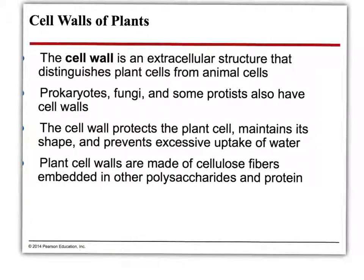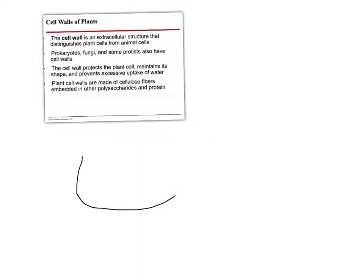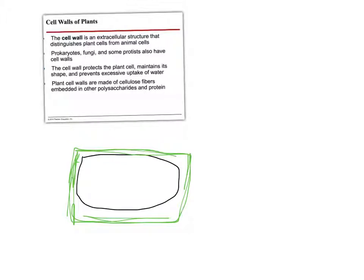First off, examples. The cell wall of plants — the cell wall of a plant is actually extracellular. It's outside of the plasma membrane of a plant cell. The plant cell wall is made of cellulose.